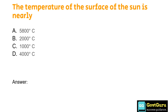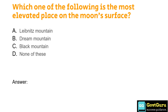Which one of the following is the most elevated place on the moon's surface? Option A: Leibnitz Mountain, Option B: Dream Mountain, Option C: Black Mountain, Option D: None of these. The answer is Option A, Leibnitz Mountain.